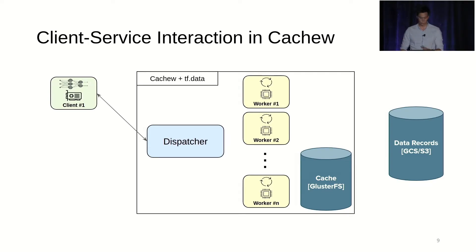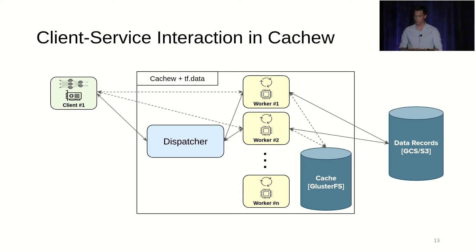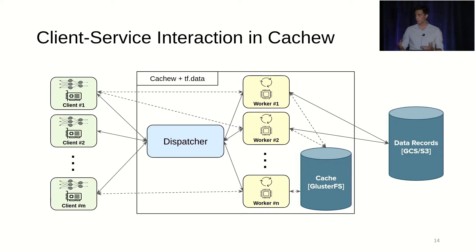The client comes in and requests that its input pipeline be preprocessed. The dispatcher recruits a worker to do so. The worker starts reading the data, either from cache or from the source layer depending on the situation, and then gives batches to the client. If the client requires another worker to keep up with its ingestion rate, the dispatcher adds one. Because this is a long-running service, new clients come in and old clients leave, but they can all benefit from each other's caching and from the auto-scaling policy.